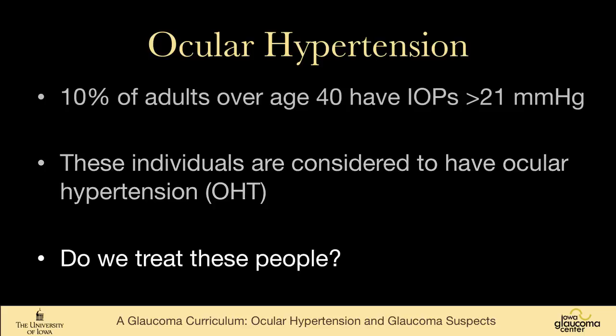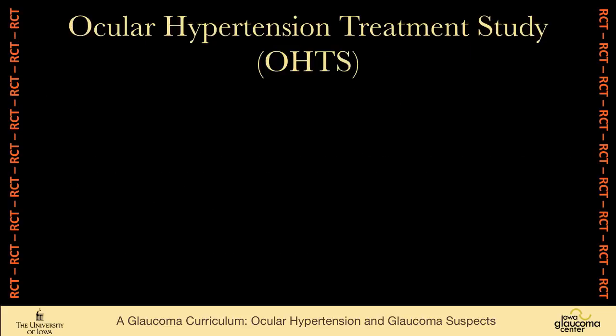And the question is, do we treat these people? That's a lot of people — 10% of the population. Thankfully, the Ocular Hypertension Treatment Study was designed to answer that very question. Throughout this lecture series, whenever I talk about a randomized controlled trial, I will put these RCTs down the side, because really the real truth of what we know comes from randomized controlled trials. We take these data with more authority than we take data from smaller, less controlled studies.